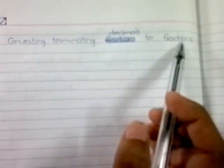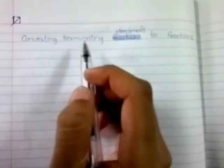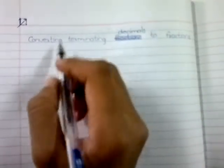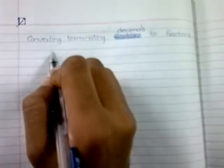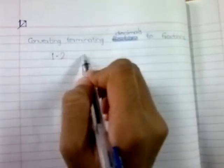We are going to learn how to convert terminating decimals to fractions. It's very simple with just a few steps involved. We'll learn this with the help of some examples. Let's take our first example: 1.2. It's a very simple example, and we want to convert this 1.2 into the form p/q where p and q are integers.